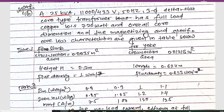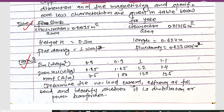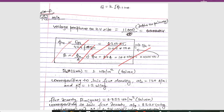A 25 kVA transformer is given here: 11 kilovolts slash 433 volt, 50 Hz, 3-phase delta-star core-type transformer. It has a full load copper loss of 720 watts. The overall dimensions and the magnetizing and specific core loss characteristics are given in the tables below — Table 1 for limb and Table 2 for yoke. We have to determine the no-load current, efficiency at full load, and identify whether it is a distribution or power transformer.